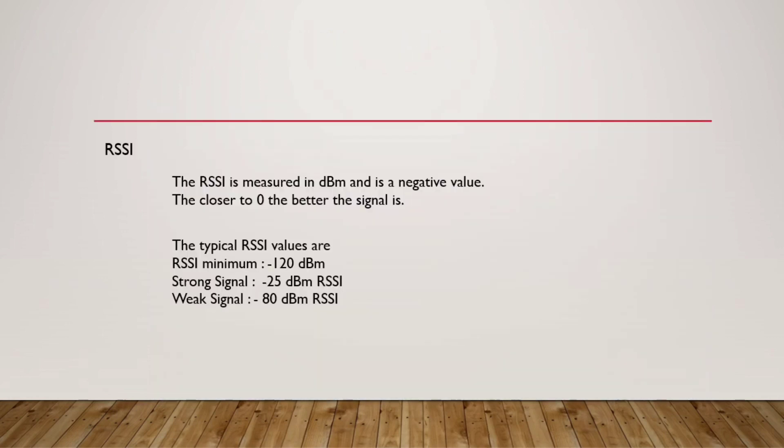Some trivia about RSSI. RSSI is measured in dBm and it's a negative value. The closer the value is to zero, the better the signal quality. So the minimum RSSI is around minus 120 dBm. Example of a strong signal: minus 25. Example of a weak signal: minus 80.